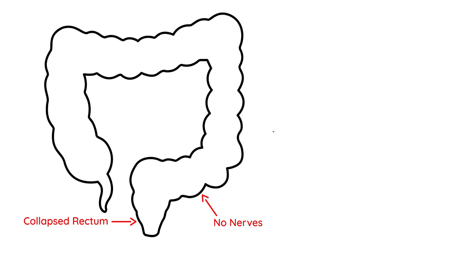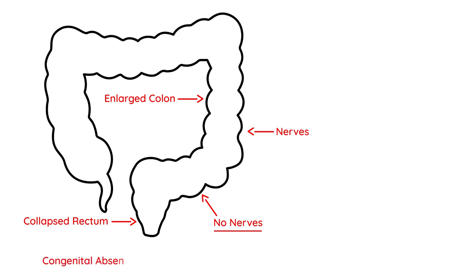The part of the colon immediately before the affected area, which does have nerves, will be dilated or enlarged or distended. The lack of nerves is the heart of the disease. It's known as a congenital absence of ganglion cells — ganglionic nerve cells. That's the key part of the description of Hirschsprung Disease, and the stool is not able to pass, causing distension in that area.